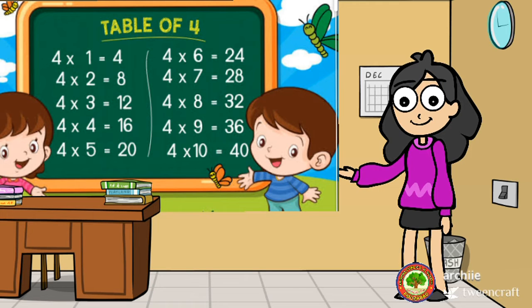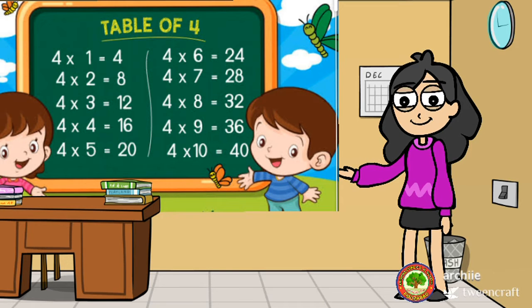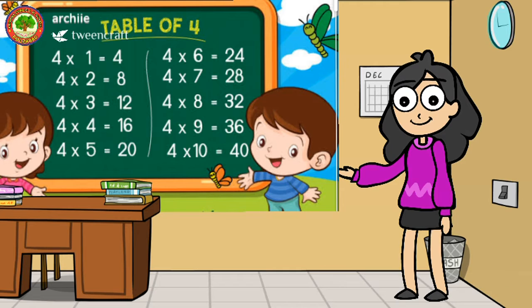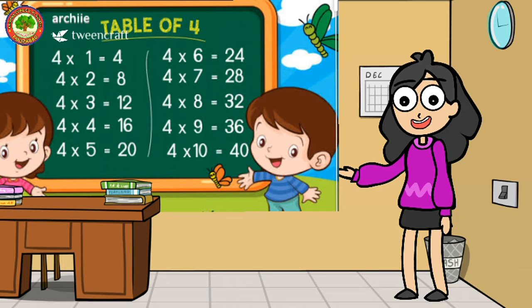4 sixes are 24, 4 sevens are 28, 4 eights are 32, 4 nines are 36, 4 tens are 40.